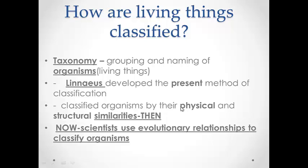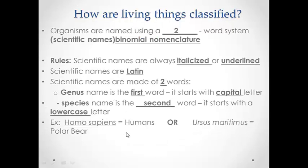Classification is the grouping of information and organisms based on similarities. There are six kingdoms: Plantae, Animalia, Fungi, Protista, Bacteria, and Archaea. Taxonomy is the grouping and naming of organisms by their physical and structural similarity. Now scientists use evolutionary relationships to classify organisms.